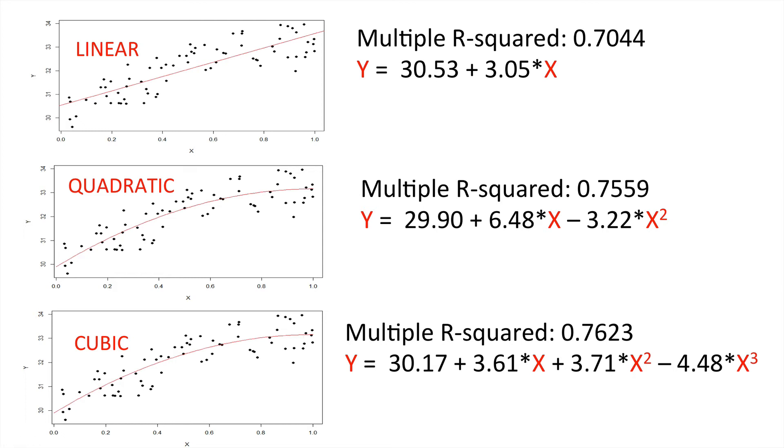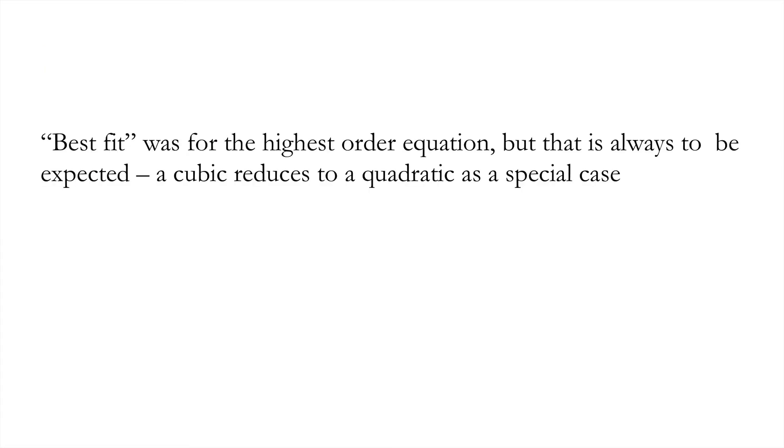Should we be using R squared as a criteria for deciding when to stop fitting a more complicated model? Well, no. In the context of polynomial regression, a higher order polynomial will always explain more of the variance than a lower order model. And that is because the higher order model will collapse to a simpler model by setting one of the terms to zero. So, the best fit was for the highest order equation, but that is always to be expected. A cubic reduces to the quadratic as a special case.